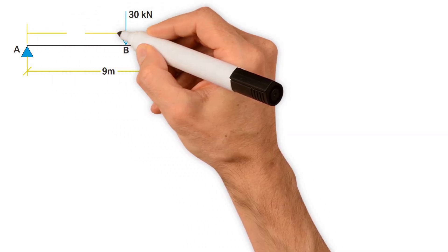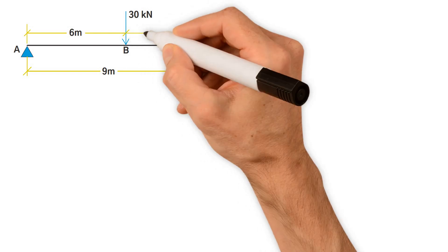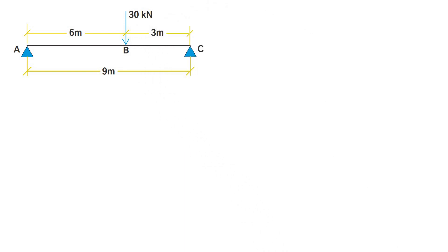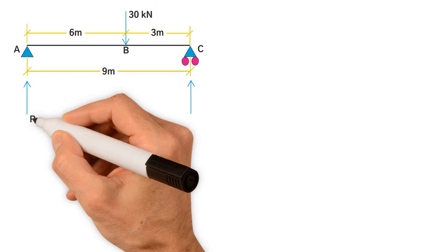The distance from A to B is 6 meters, and from B to C is 3 meters. It is simply supported with a roller support at this end, and we only have one vertical load applied onto the beam at B. Hence, we would have vertical reactions at A and C. Let's call them R_A and R_C.